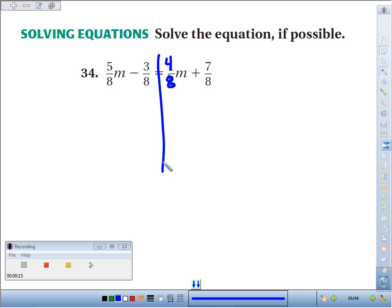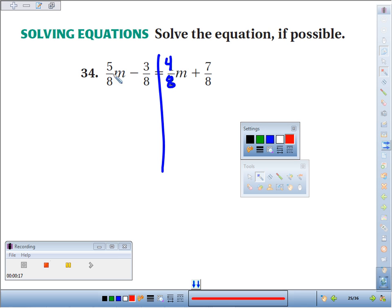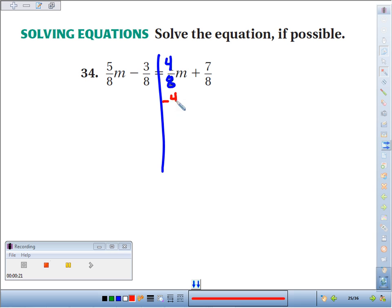Now, since we have variables on both sides, we need to eliminate them from one side. And since 5/8 is bigger than 4/8, I'm going to choose to get rid of them right here. So I'll minus 4/8 m on the right, but then I have to do it to the left to keep things equal. So they cancel here. 5/8 minus 4/8 is just 1/8. And then we still have that minus 3/8 equals, over here we have 7/8.